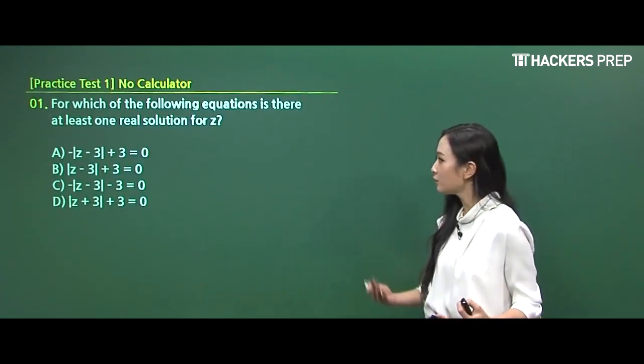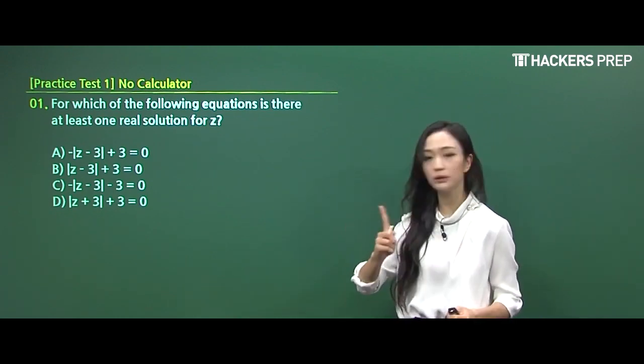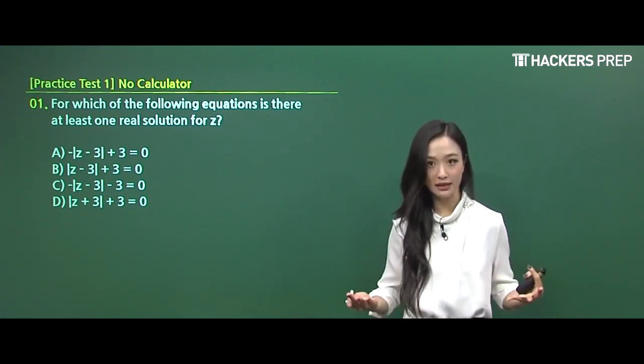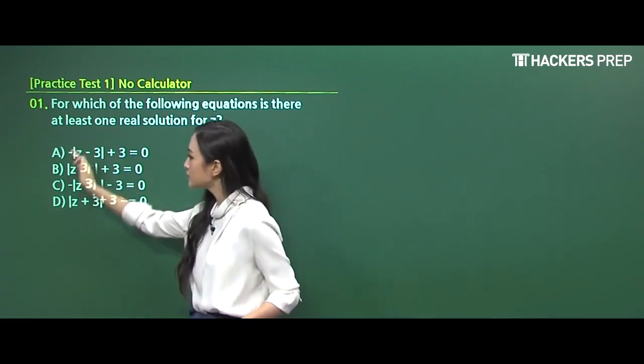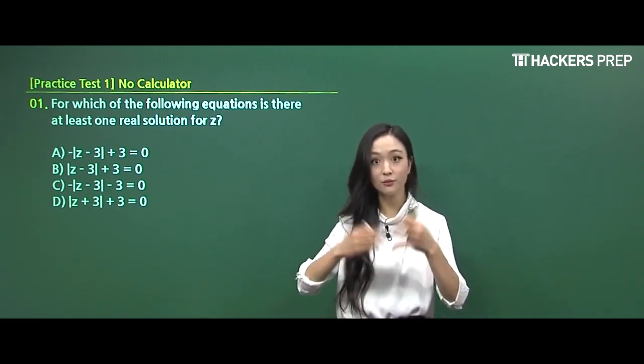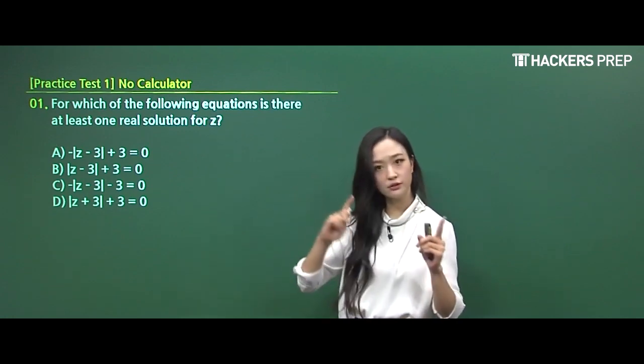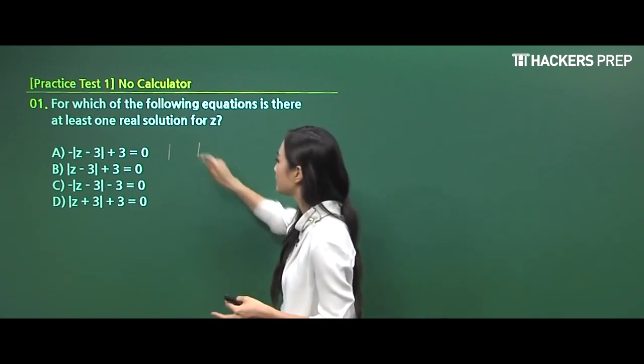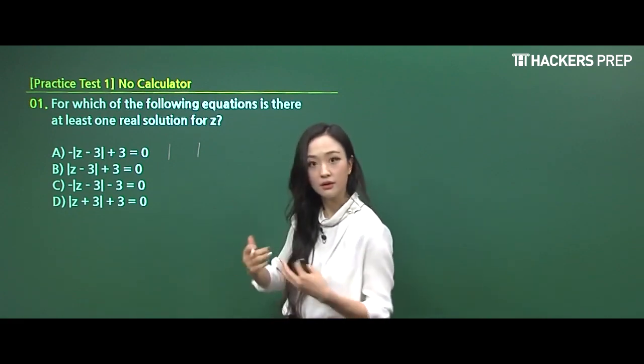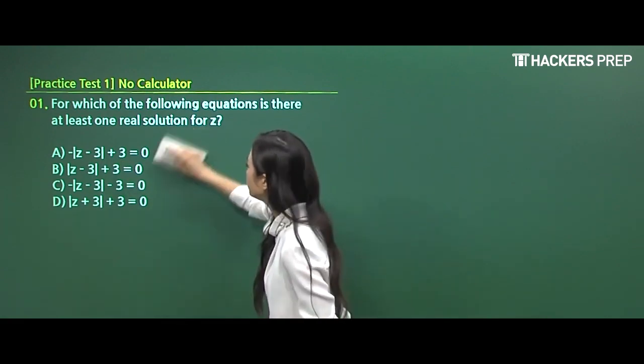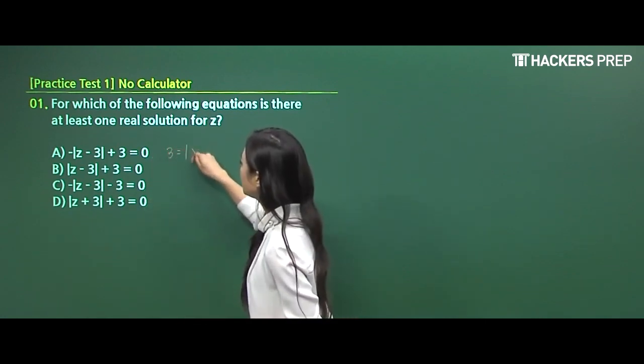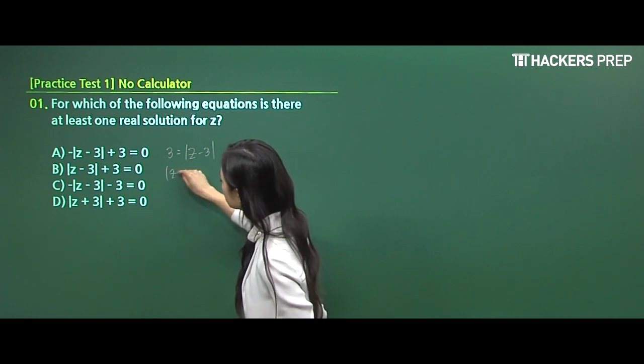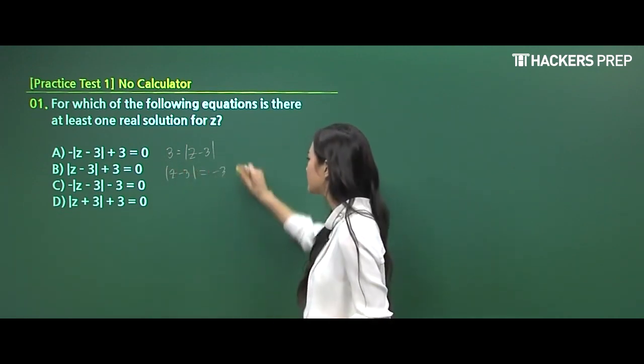So number one, what are they asking for? The question states which of the following equations is there at least one real solution for Z? Simply put, this is asking for an equation that is solvable algebraically. So what I first did was, since an absolute value expression involves the concept of distance, it can never have a negative value. Since we cannot use our calculator for this question, I transferred everything and put the absolute value expression on one side and left the other constant values on the other side.